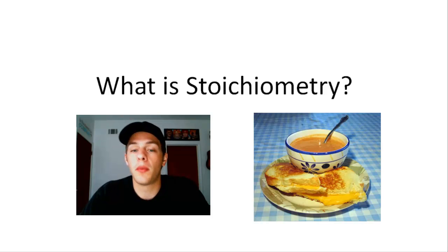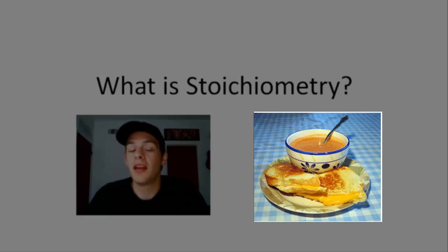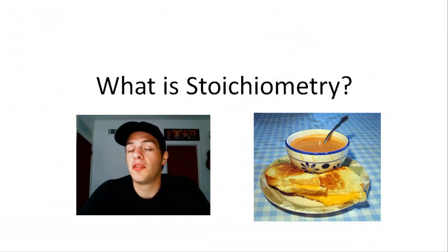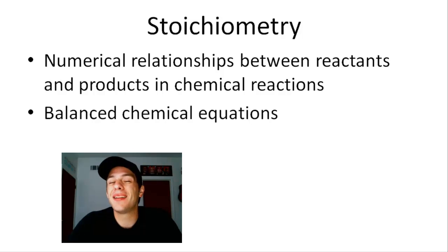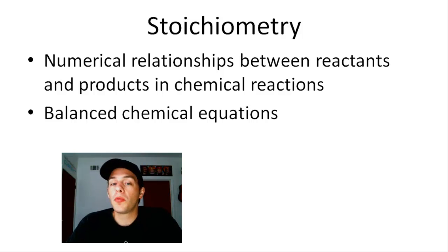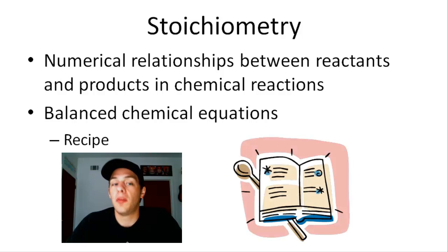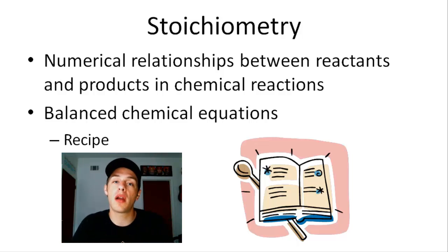You may be asking yourself, what is stoichiometry and why is there a grilled cheese sandwich on my screen? So I'm going to explain all of that right now, and I'm going to start by defining the word stoichiometry. Stoichiometry is the branch of chemistry that deals with the numerical relationships between reactants and products in chemical reactions. We get these numerical relationships from balanced chemical equations. If you don't know how to balance chemical equations, it's very simple and I do have a video for that. The balanced chemical equations basically serve as recipes — they tell us how many of each reactant we put in and how many of each product we get out.